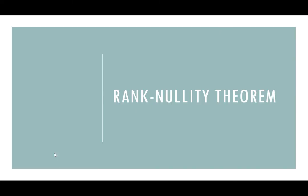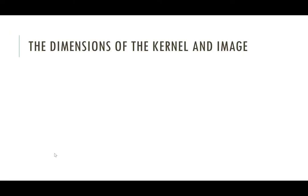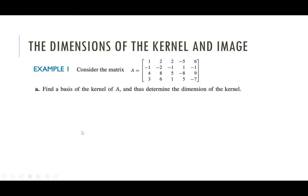Let's move on to the rank-nullity theorem — something we can now understand since we have the concept of dimension under our belts. We'll start by considering the dimensions of the kernel and the image of a matrix. In our first example, we have a four-by-five matrix, and our first task is to find a basis of the kernel of A. Once we have a basis, we count the vectors to find the dimension.